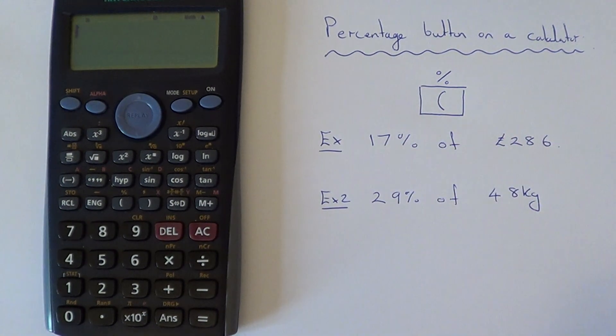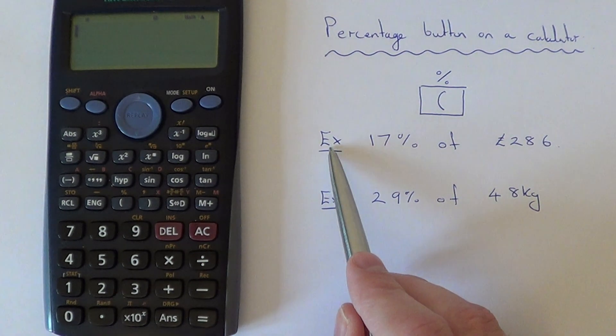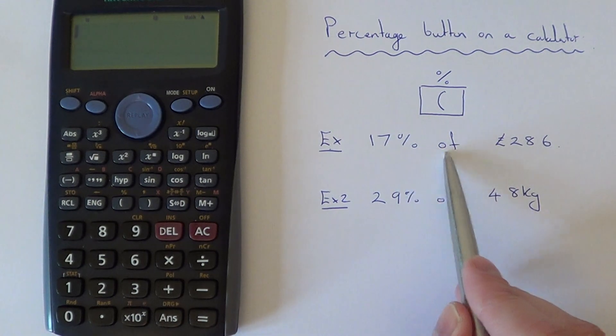Let's show you how to use that percentage key. The first example is to work out 17% of £286.